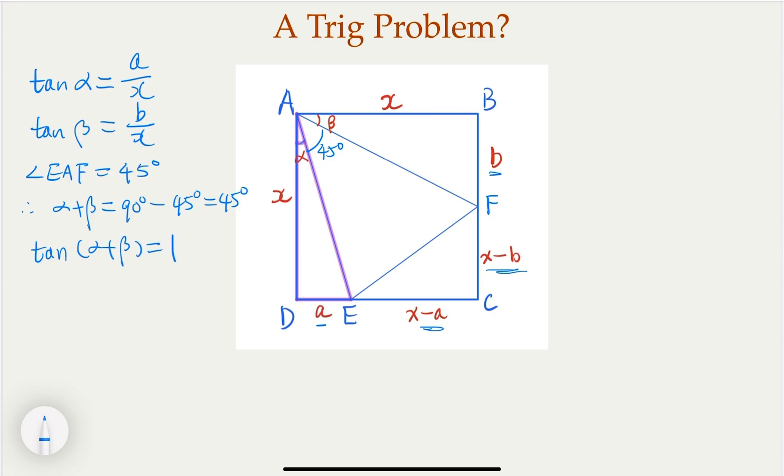Now, you probably realized by now that we would use the trig identity for tangent of alpha plus beta. So what is that? Let's write it here.